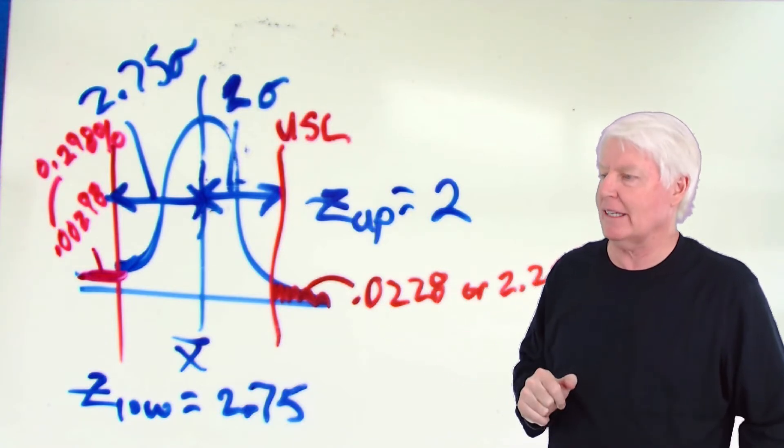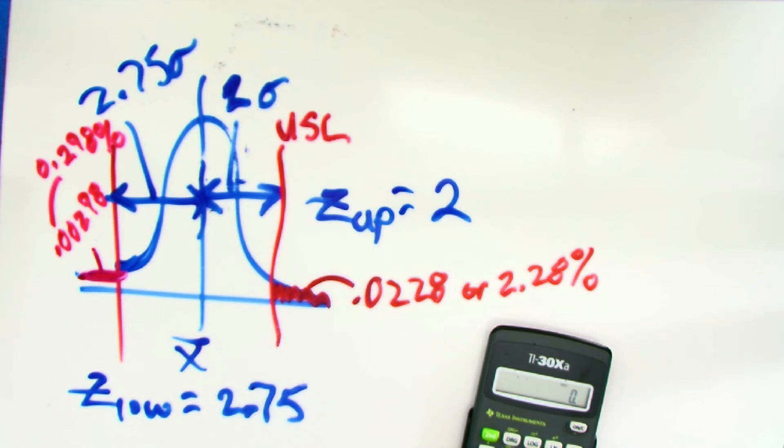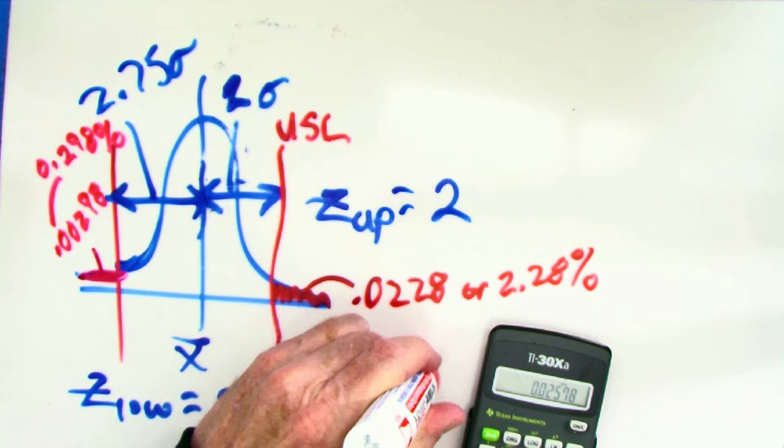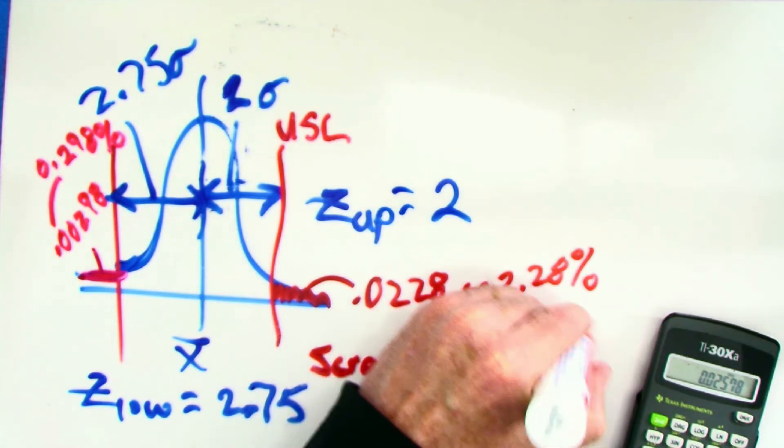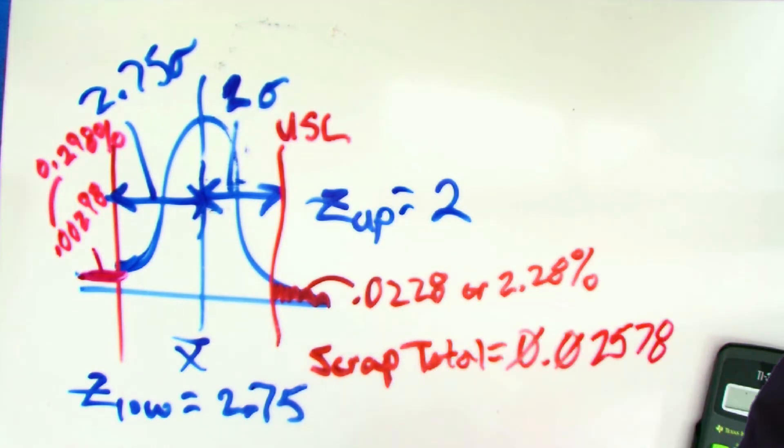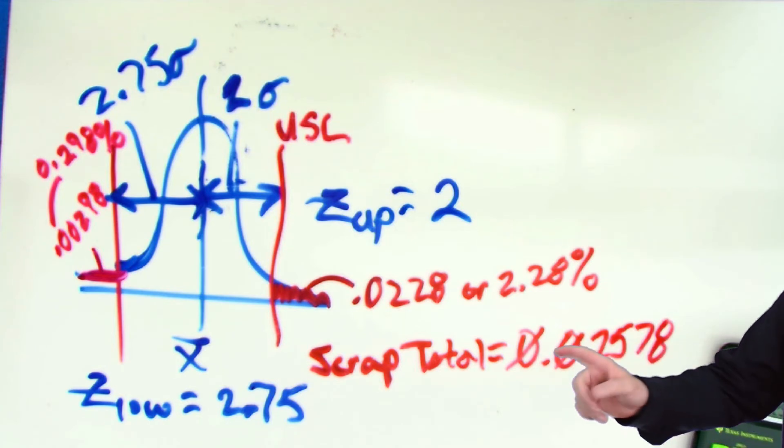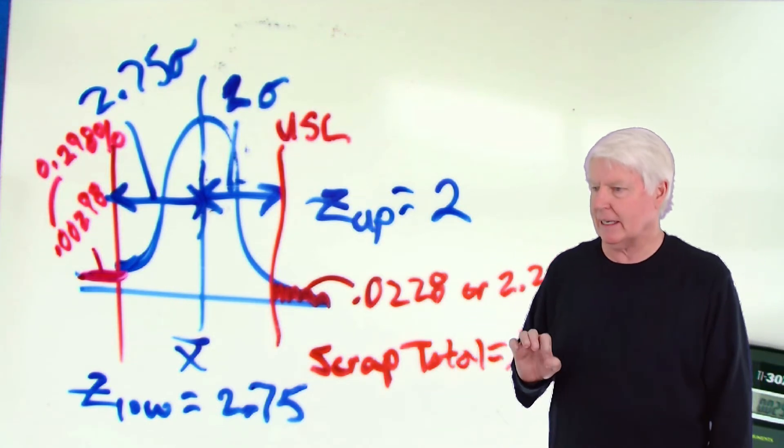All right, so now I've looked up z upper in the z table and z lower in the z table, which was the .0298. Now if I want to know the overall estimated scrap rate, I would just add those together so I can do that. Let me take out the calculator here, and I go .0228 plus .00298 equals, and that gives me my overall scrap. My total scrap rate is .02578, and so if you multiply that by 100, it would give you 2.578% scrap is what we'd estimate scrap to be.